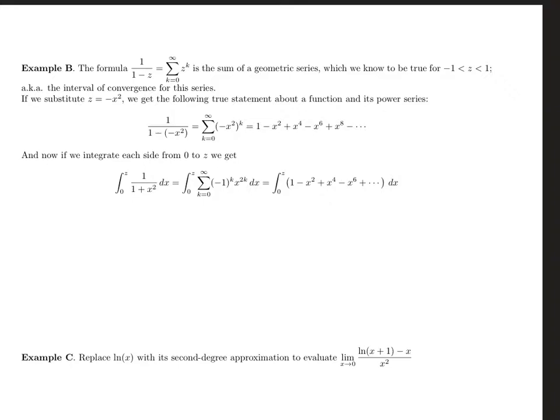All right, so first of all, for the manipulation part, we'll continue with the example of the geometric series. And remember, what we're saying with the geometric series is that if you take 1 plus z plus z squared plus z cubed and so on, you'll get 1 over 1 minus z. And that's true as long as z is between negative 1 and 1. And again, that comes from the geometric series formula.